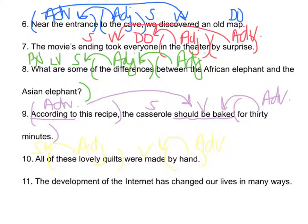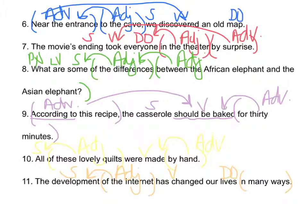'The development of the internet has changed our lives in many ways.' 'Of the internet' and 'in many ways' are the phrases. 'Has changed' is the verb; what has changed? The development. 'Of the internet' modifies 'the development,' which is a noun: adjective phrase. 'In many ways' — has changed in many ways — modifies the verb: adverbial phrase.